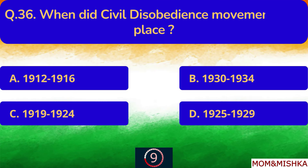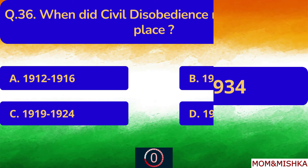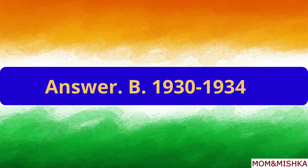When did the Civil Disobedience Movement take place? From 1930 to 1934. Option B.